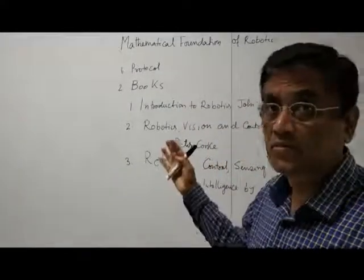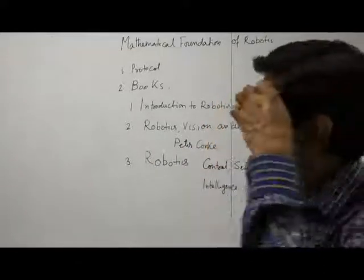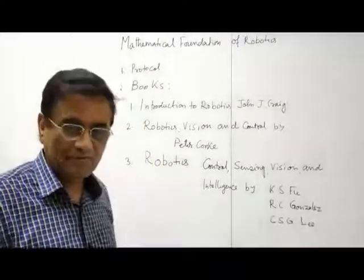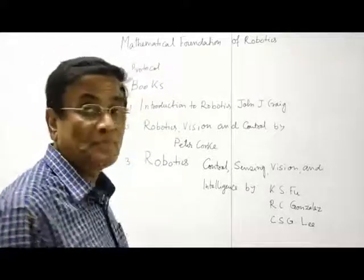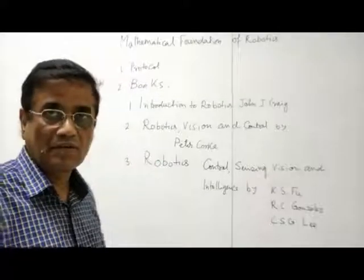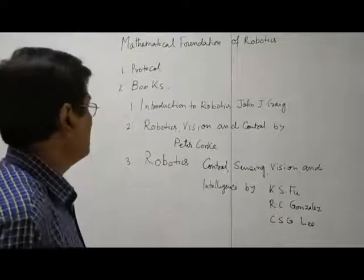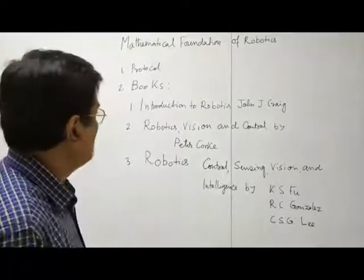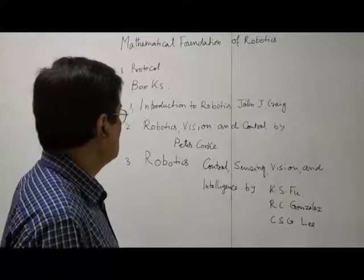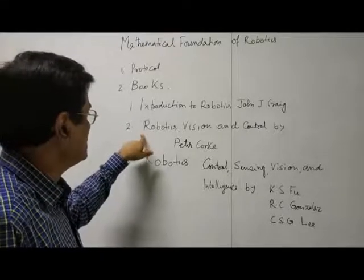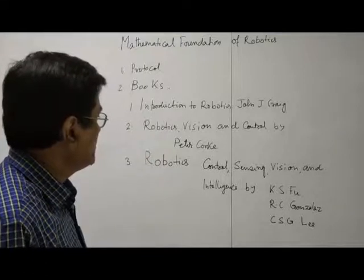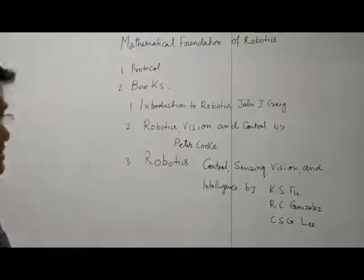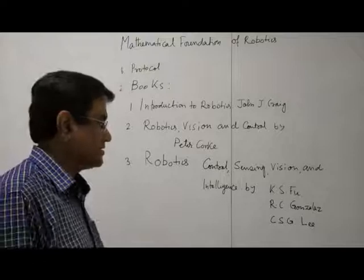I am also referring to some good books which I will follow. Some of you can buy them — nowadays books are affordable in India because they have paperback editions. The textbook I recommend is Introduction to Robotics by John J. Craig. There is also a wonderful recent book: Robotics, Vision and Control by Peter Corke. And then Robotics: Control, Sensing, Vision and Intelligence by K.S. Fu, R.C. Gonzalez and C.S.G. Lee.